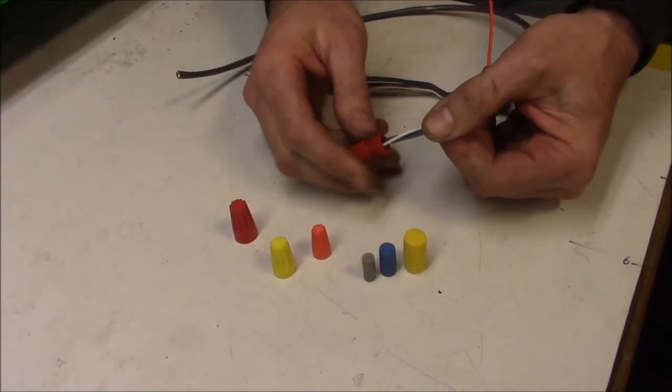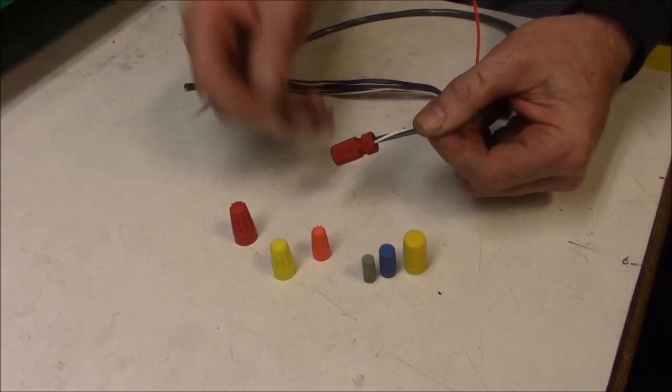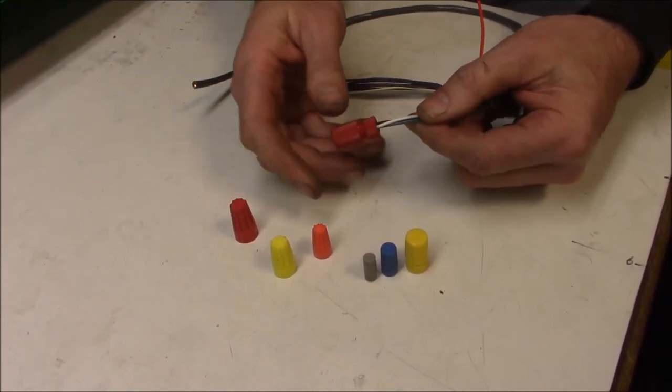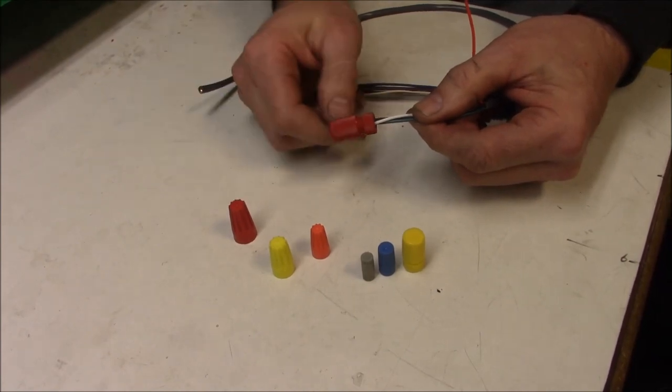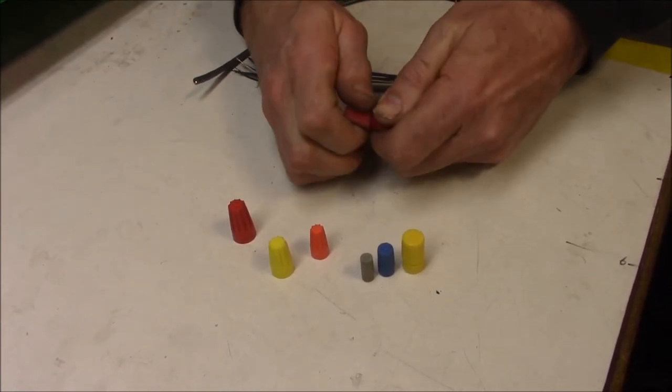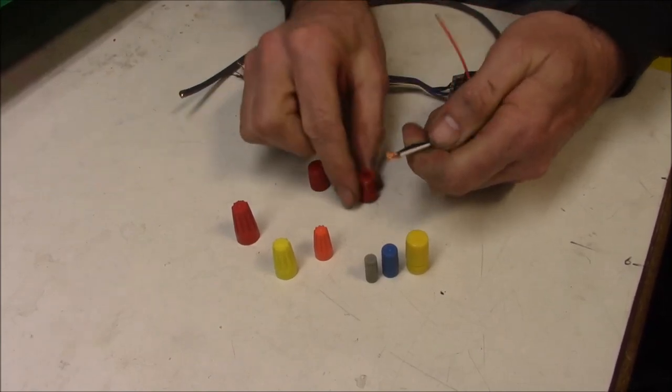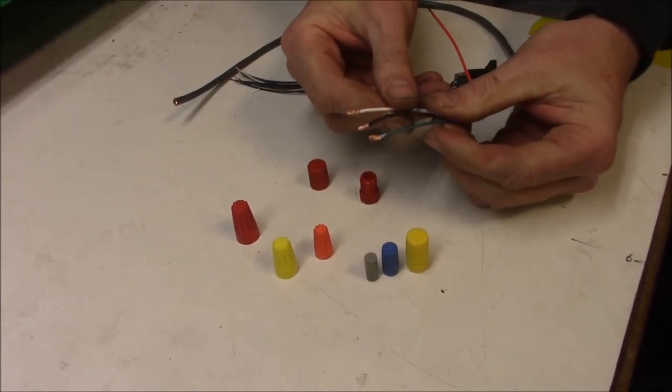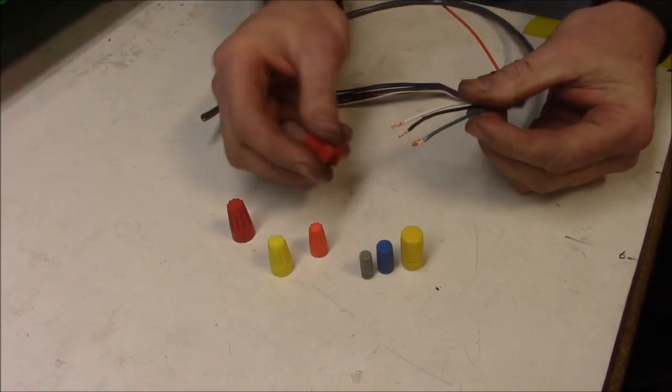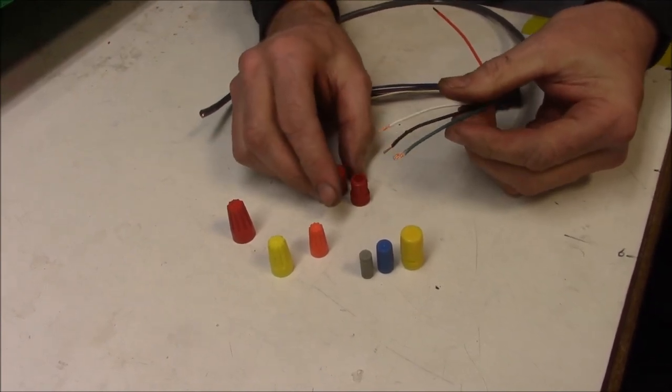That's how they work. Very easy to use - no tools, no crimping, no soldering, nothing. This is much stronger than a wire nut would be, and they're reusable, so you can unscrew it, pull that off, and then your wires are good to go. So that's a Posi Twist.